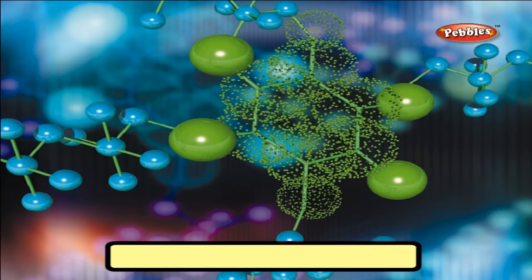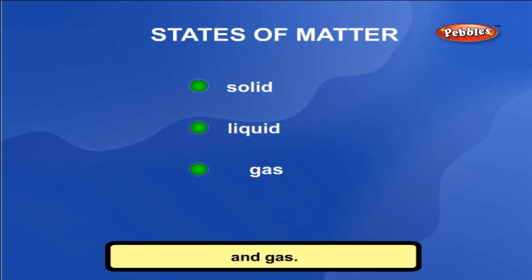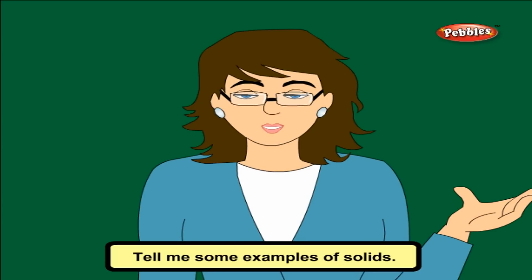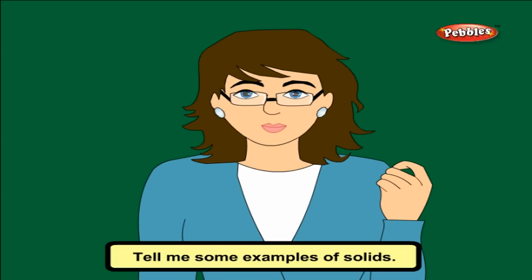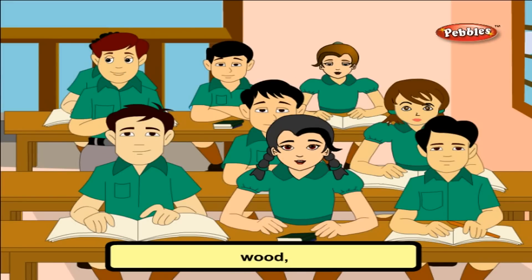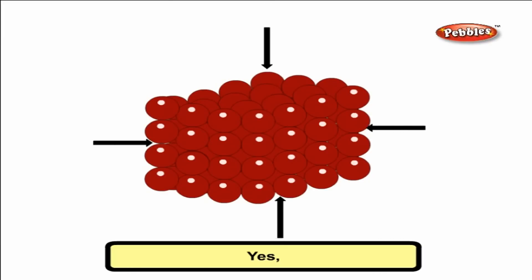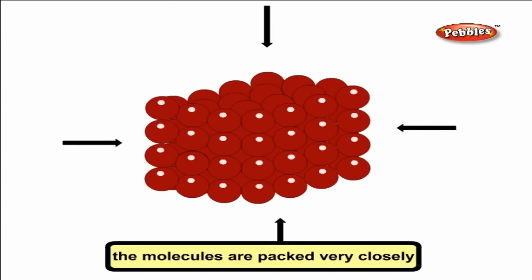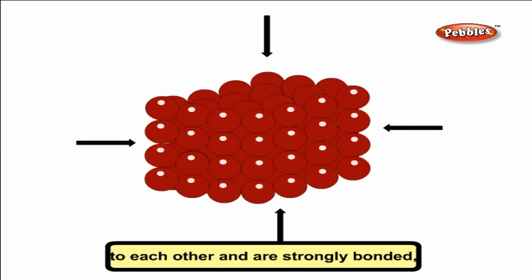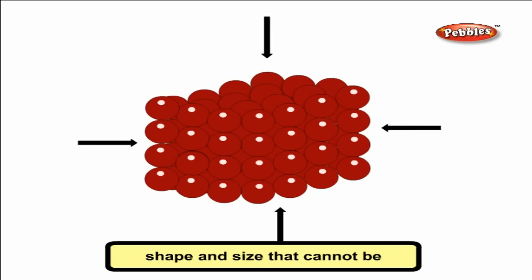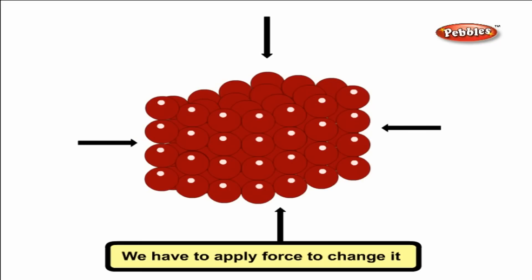Solid, liquid and gas. Tell me some examples of solids. Chalk, wood, iron, etc. Yes! In solid substances, the molecules are packed very closely to each other and are strongly bonded. Because of this, solids have a definite shape and size that cannot be changed easily. We have to apply force to change it.